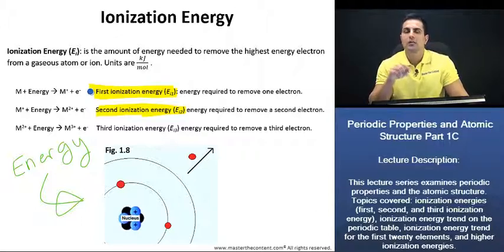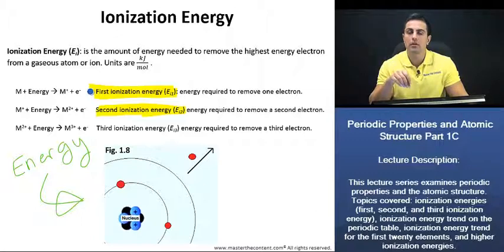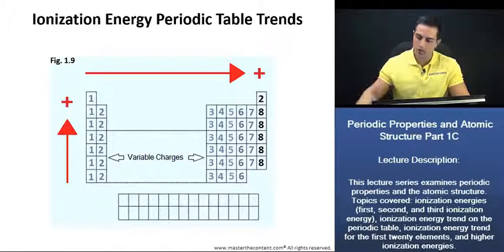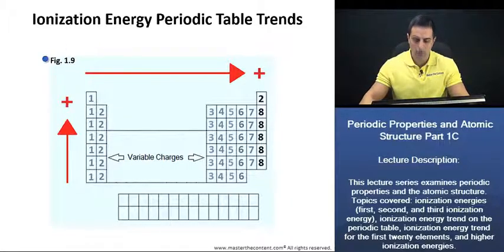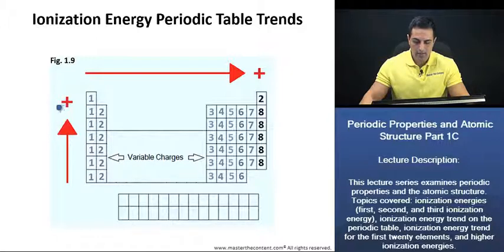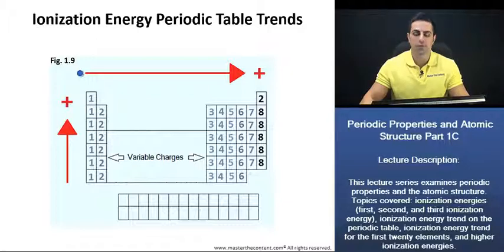Next, let's point out the ionization trends and examine them on the periodic table and explain why they exist as they do. Looking here at figure 1.9, we see that the ionization energy trend increases going from left to right on the periodic table. Furthermore, it increases up a group. Let's explain this trend first — why it increases across the period — and then we can look at why it increases as we go up a group.